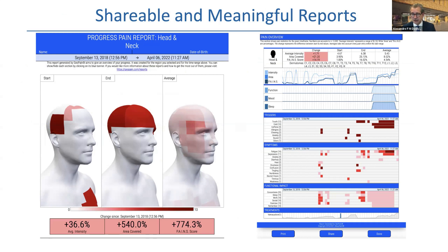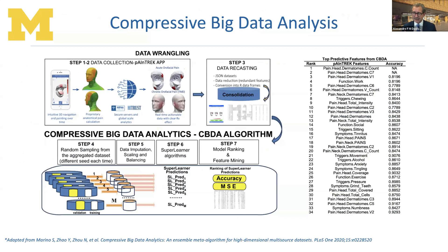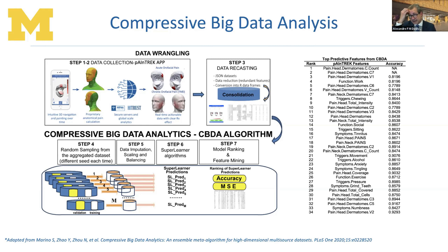The data analysis becomes more complex, adding compressed big data analysis developed at the University of Michigan — for example, from Dr. Ivo Dinov — where the data goes into a diversity-in-model ranking. The features that decide the characterization of temporomandibular disorders and migraine data are analyzed, and with random sampling we can characterize the factors and symptoms that better classify these patients.